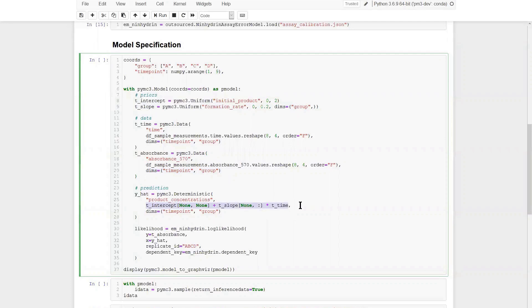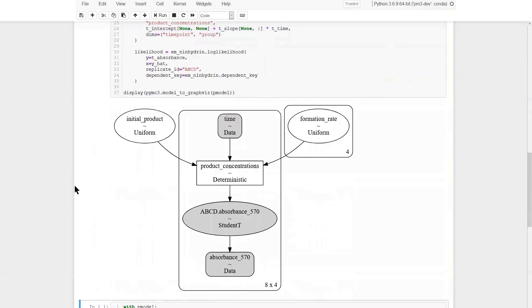Here, we have to do a bit of Theano tensor variable slicing, so the element-wise operations work out. Again, the shapes are named with the dimensions. The prediction is passed into the log-likelihood method of our error model. Alongside the prediction, we have to pass the observations. This single call to the log-likelihood method constructs the computation graph for making the observations. Finally, we can create and plot this new PyMC3 model.